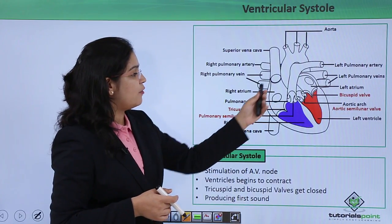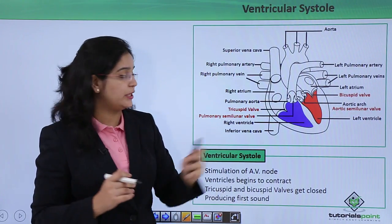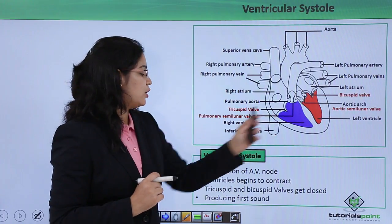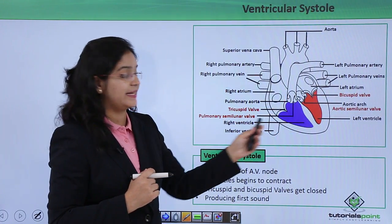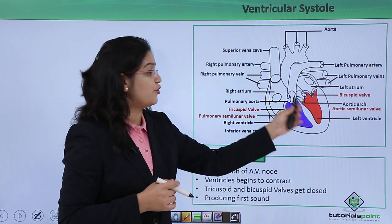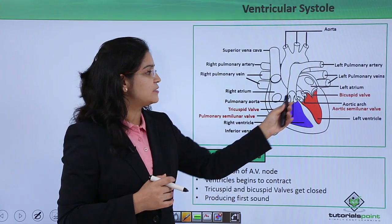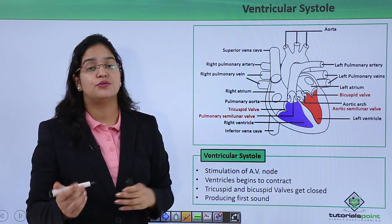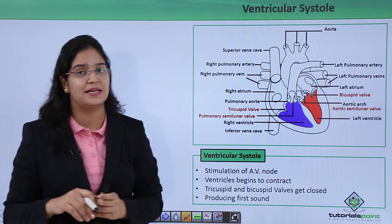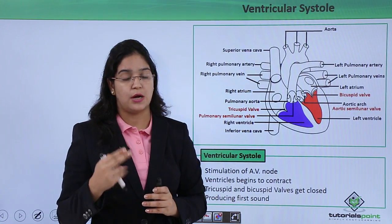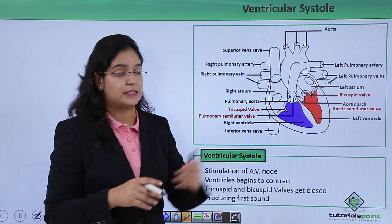As the atria are now in a relaxed phase, the contraction passes to the ventricles — this phase is called ventricular systole. The impulse from the SA node transfers to the AV node, which further passes it to the bundle of His and Purkinje fibers, initiating contraction in the ventricles. As pressure increases in the ventricles, both tricuspid and bicuspid valves get closed to prevent backflow of blood, producing the first heart sound: 'lub'.